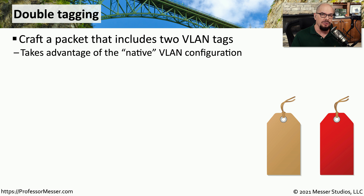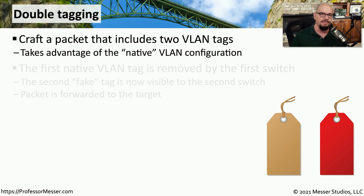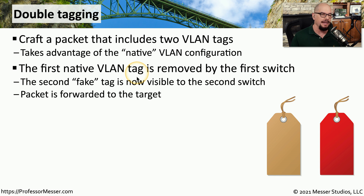Normally when information is sent across a trunk, a tag is added to that frame that has the VLAN information to be interpreted on the other side. If you add an additional tag to that same frame, you may be able to take advantage of double tagging, where the first switch will interpret the first tag, send the traffic on to another switch, where the second tag will then be evaluated. This takes advantage of a feature in the switch called the native VLAN that doesn't require a tag to exist. So once the first native VLAN tag is removed, the attacker's fake tag can be used to send that traffic to any VLAN.